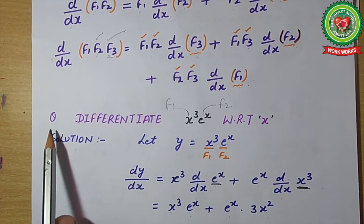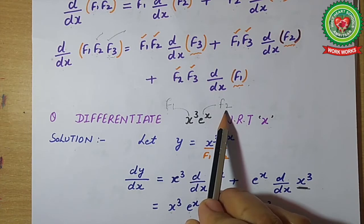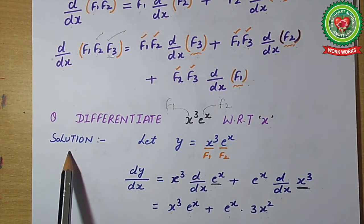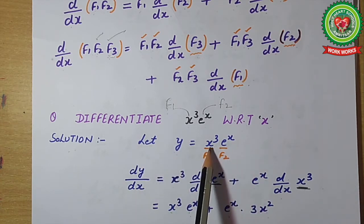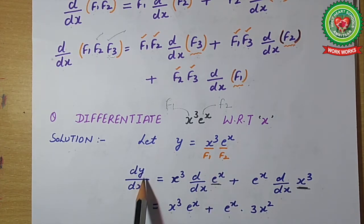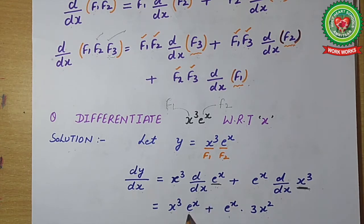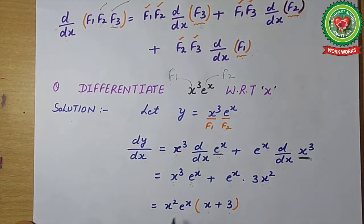Let's take an example: differentiate x³·eˣ with respect to x. Two functions are there — f1 and f2. We let y = x³·eˣ. Differentiating with respect to x: dy/dx = first function as is times ddx of second function, plus second function times ddx of first function. ddx of eˣ is eˣ, and ddx of x³ is 3x². Taking x²·eˣ as common factor, the remainder is x + 3.